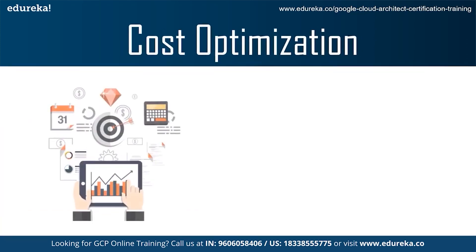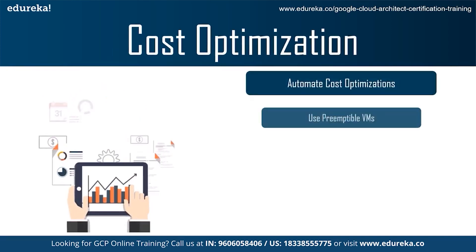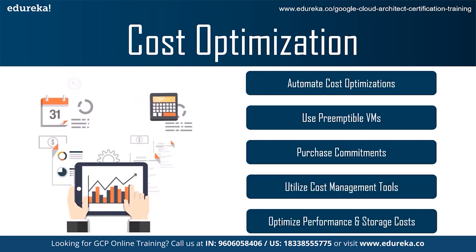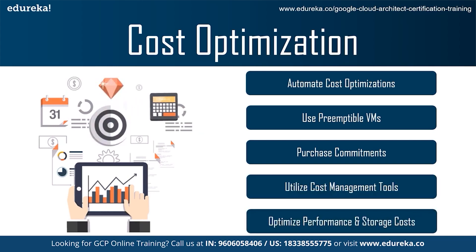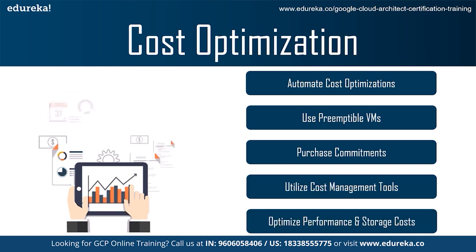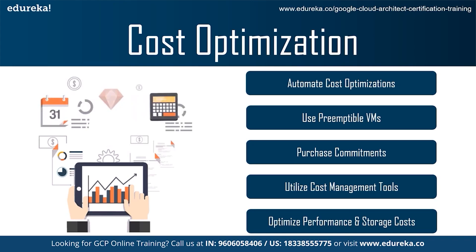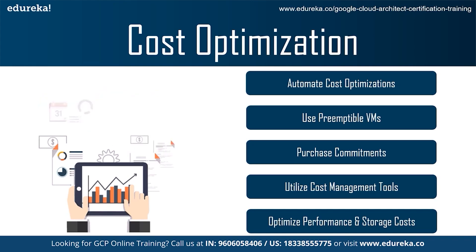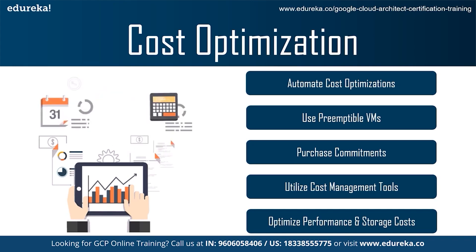Moving on to the second category: cost optimization. One of the best practices for cost optimization is to automate tasks and reduce manual intervention. Automation is simplified using a label, which is a key-value pair applied to various Google Cloud services. You can attach a label to each resource such as compute instances, then filter the resources based on their labels.